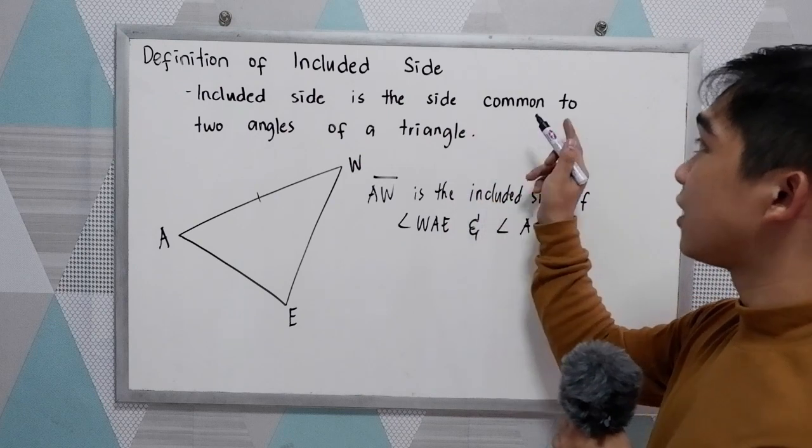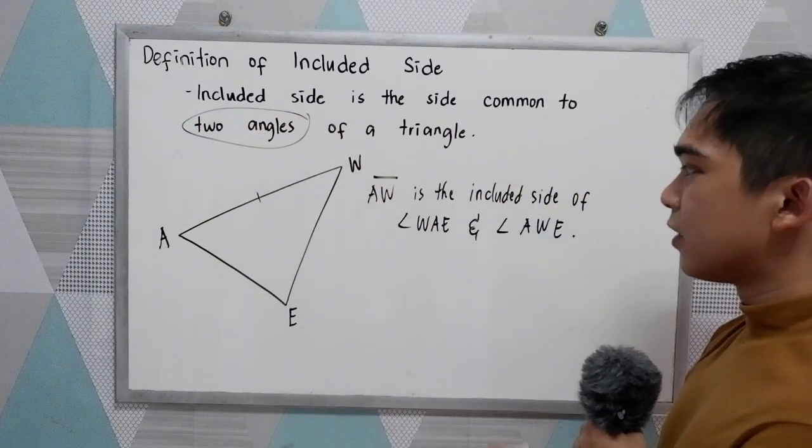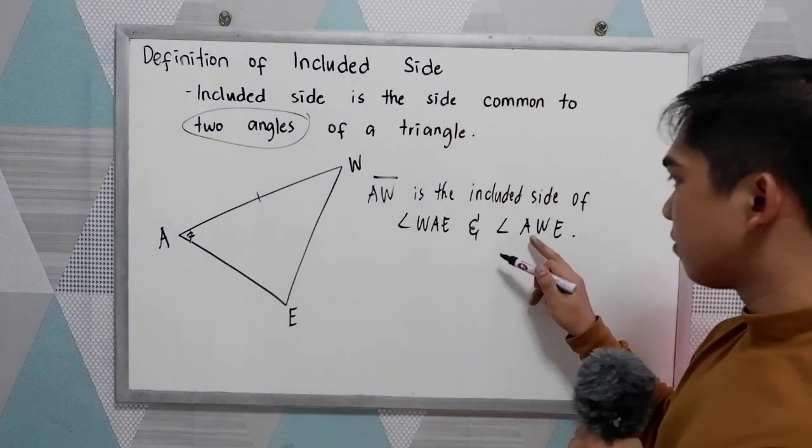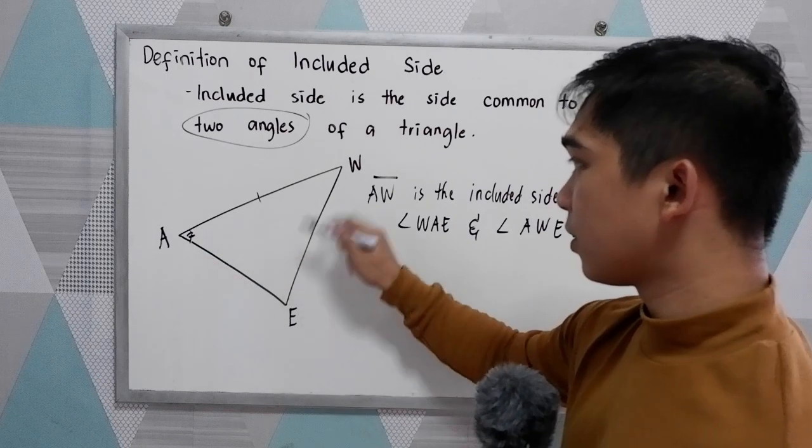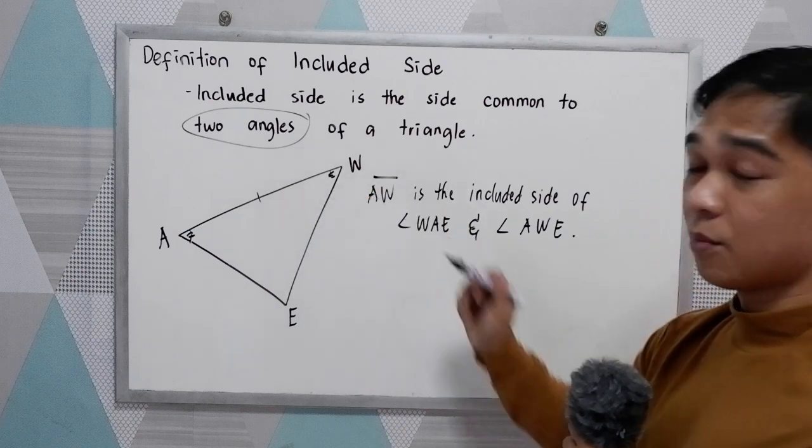Included side is the side common to two angles of a triangle. So we have WAE, WNE, and AWE. So their common side is side AW.